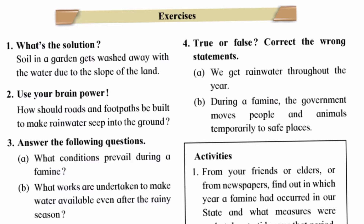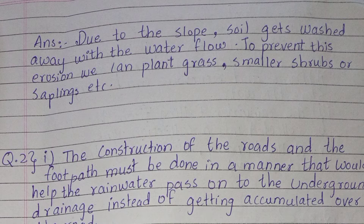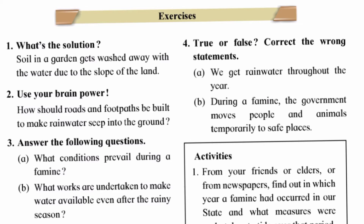Exercise question one: The soil in a garden gets washed away with the water due to the slope of the land. Answer: Due to the slope, soil gets washed away with the water flow. To prevent this erosion, we can plant grass, small shrubs, and saplings.